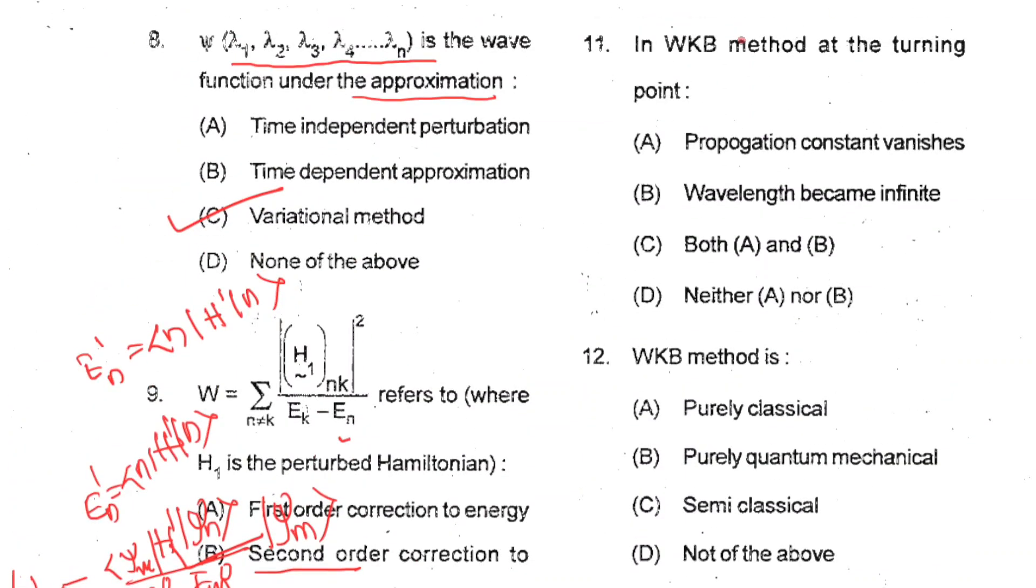Question 11: In WKB method, at the turning point, where potential energy equals total energy, kinetic energy will be zero, propagation constant vanishes and wavelength becomes infinite. So both the options are correct, both A and B. And also remember at turning point wave function becomes infinite. You can check any standard book, you will find this concept.